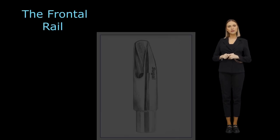The frontal rail is the tip of the mouthpiece that extends furthest into the player's mouth while playing.